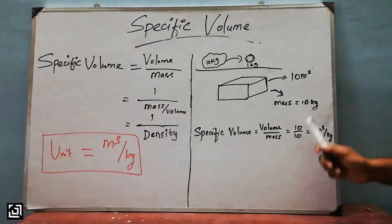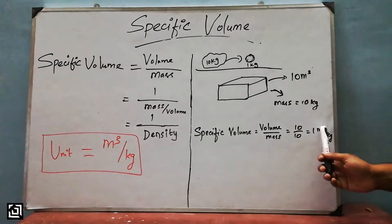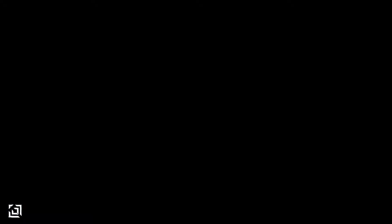For example, 10 m³ and mass is 10 kg, so 1 m³ per kg. This is the specific volume.